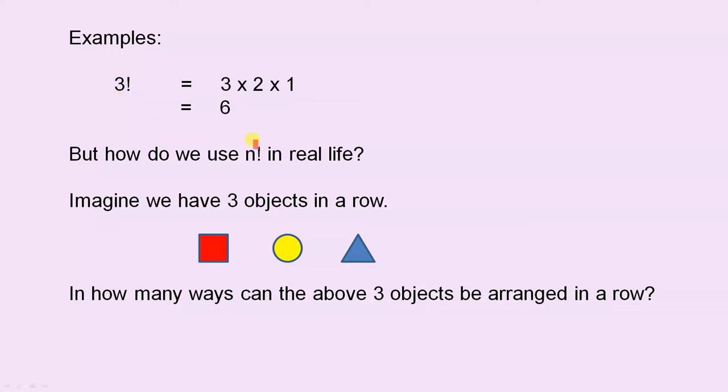But how do we use n factorial in real life? How is it useful in real life? Okay, well, let's have a look at this example. Imagine we have 3 objects in a row, so we've got a square, a circle, and a triangle.